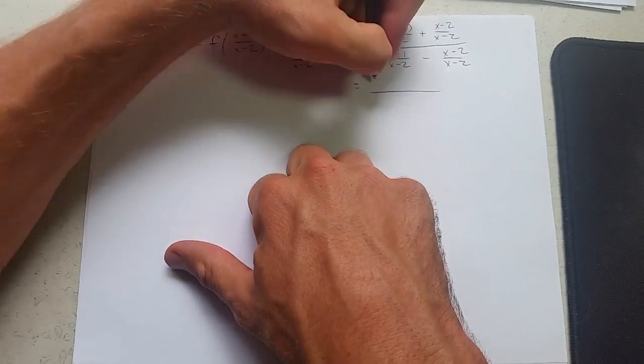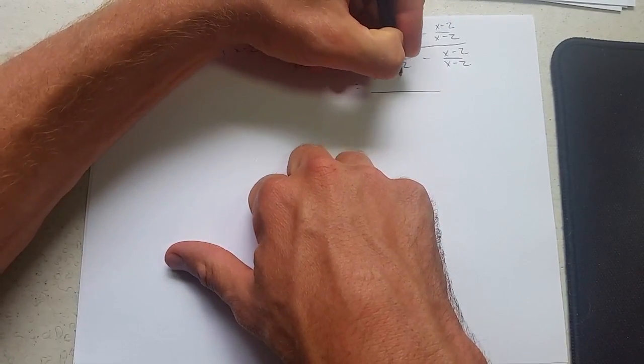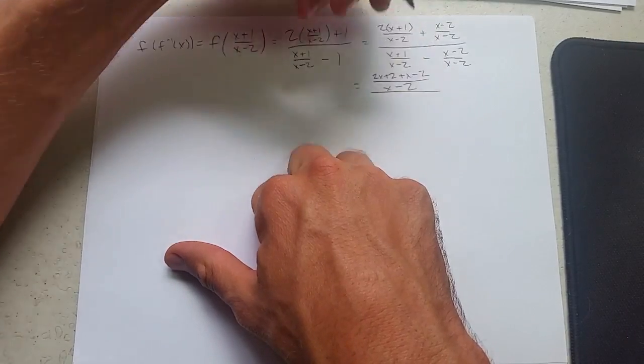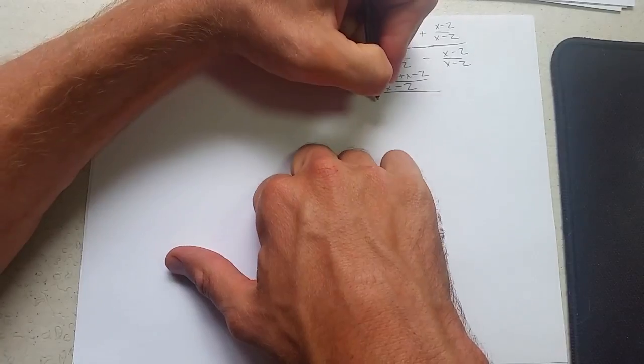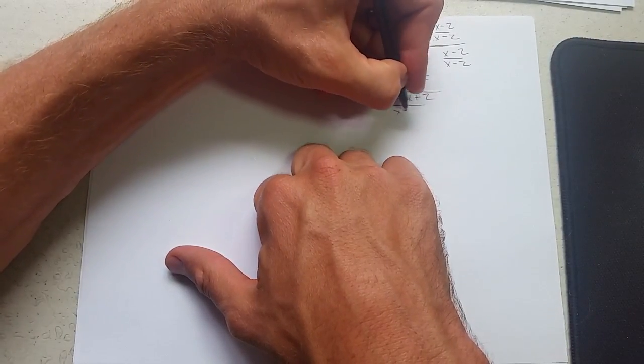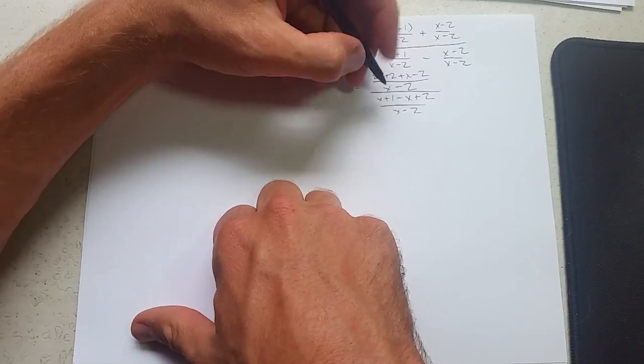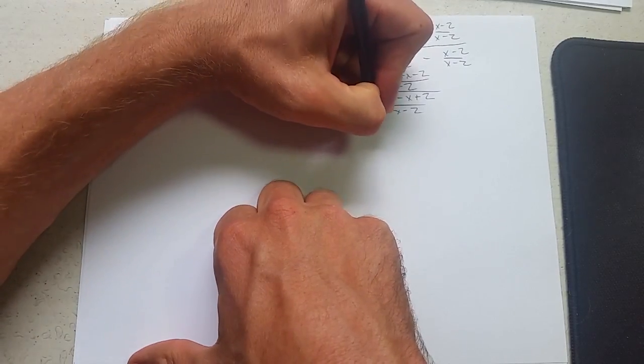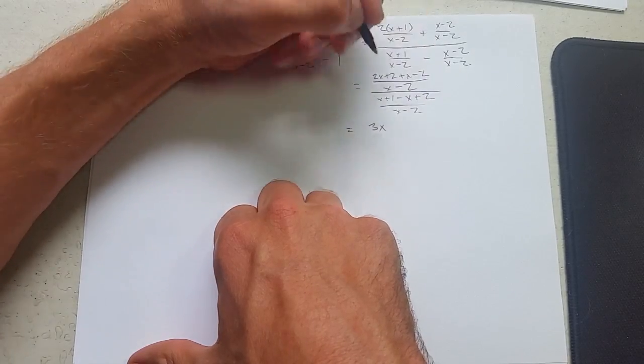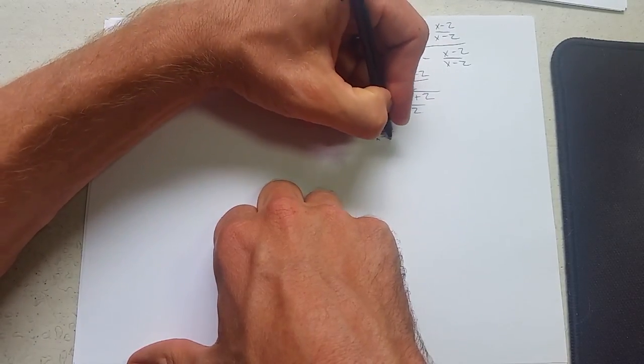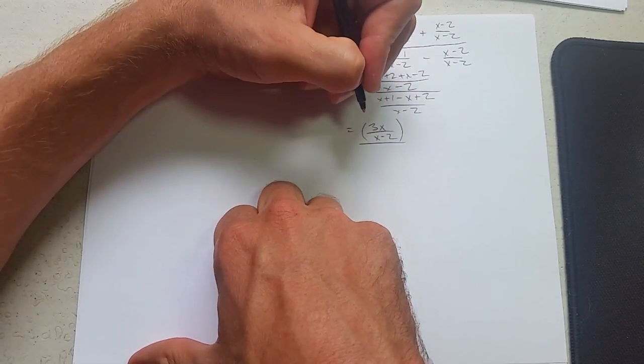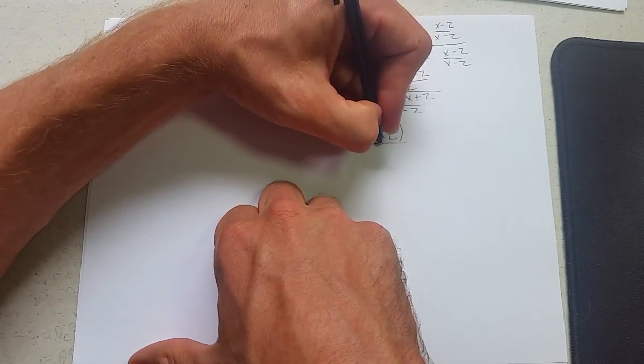So we have 2x plus 2 plus x minus 2 divided by x minus 2. So we have x plus 1 minus x plus 2 over x minus 2. We'll simplify. 3x plus 2 minus 2 cancels out. Divided by x minus 2 divided by x minus x is 0, 1 plus 2, we have 3.